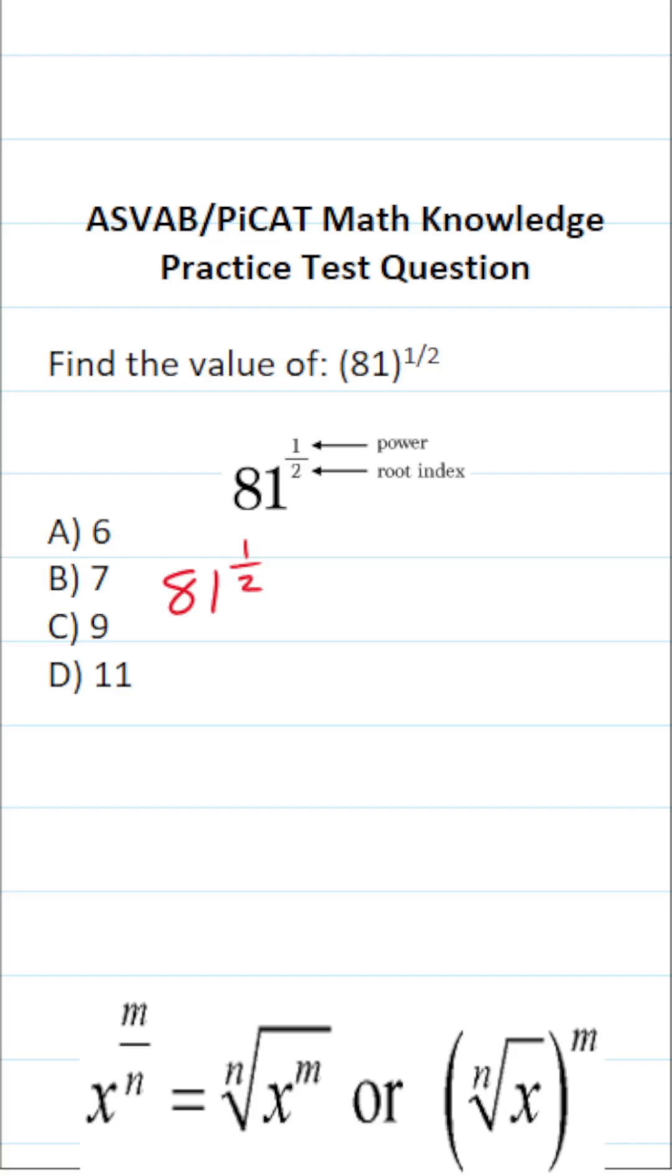In this case we have a whole number raised to a fractional power. Whenever you have something raised to a fractional power that's going to prompt you to rewrite it as a radical. This is the formal way to do it but this is very easy to do informally.